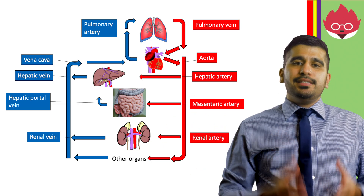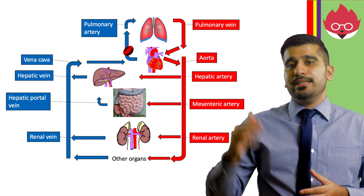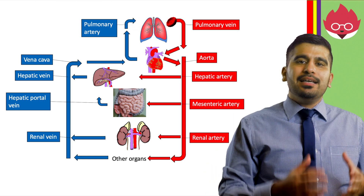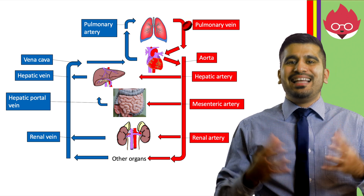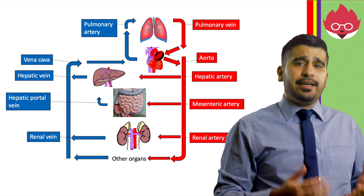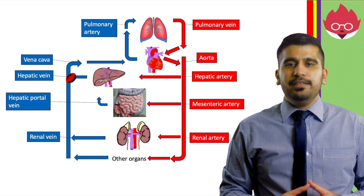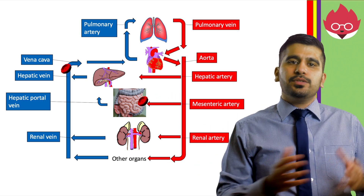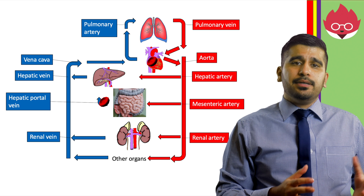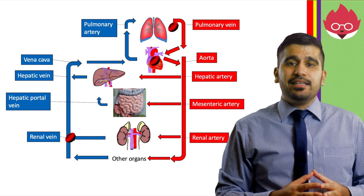In this diagram, you can see the structure of the circulatory system. On the right side, blood vessels carry oxygenated blood. On the left side, in blue, are all the blood vessels that carry deoxygenated blood. The hepatic artery supplies blood to the liver and the hepatic vein transports blood away from the liver. The mesentery artery carries blood towards the intestines, and blood leaving the intestine does so via the hepatic portal vein, passing through the liver and the hepatic vein. The renal arteries take blood to the kidneys and blood exiting the kidneys does so via the renal vein.